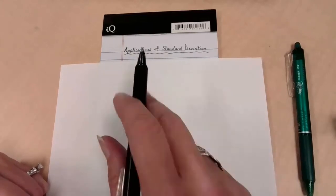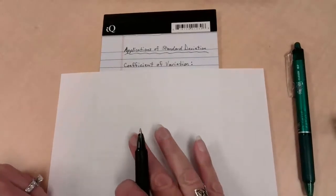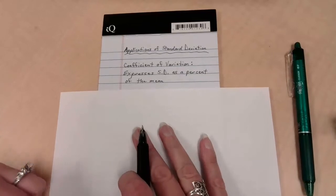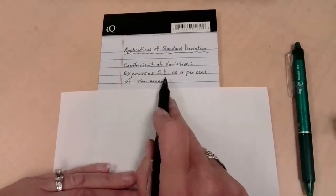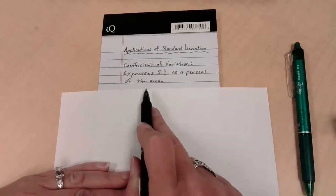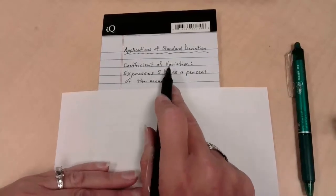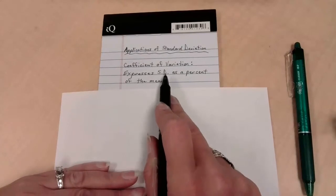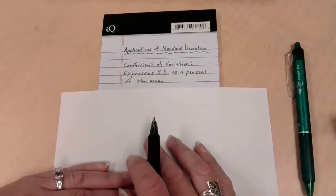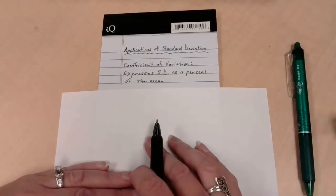There's two applications I'd like you to see today, and the first one is called the coefficient of variation. The coefficient of variation takes our standard deviation and expresses it as a percent of the mean. In other words, it compares the standard deviation for a data set, how far it's spread out, with the mean of the data, the center of the data. Why would you do that?